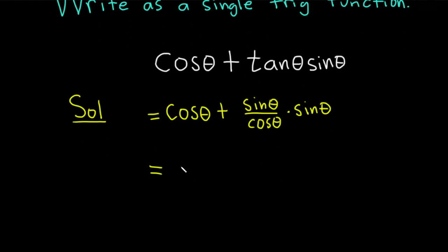So this is equal to the cosine of theta plus, and then sine times sine. You can think of this as a fraction over one, so you're allowed to multiply here. So we'll get sine squared of theta over cosine theta.